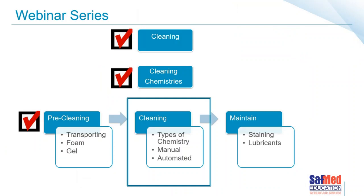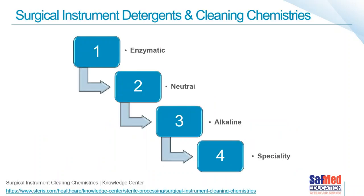Summarizing what we've covered so far: cleaning and the importance of cleaning, Sinner's Circle, cleaning chemistries — some terminology and components in the formulations needed for effective cleaning — and the importance of pre-cleaning. We've got about 10 minutes left, and I'm now going to start talking about the chemistries we can use for the main cleaning event. Remember I said enzymatic — we're dividing our detergents and cleaning chemistries into enzymatics, neutrals, alkalines, and speciality type chemistries.